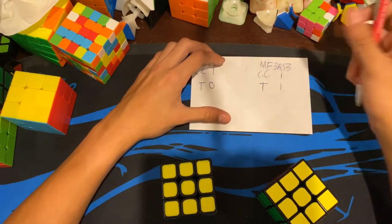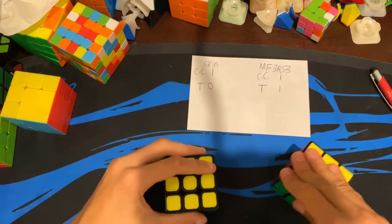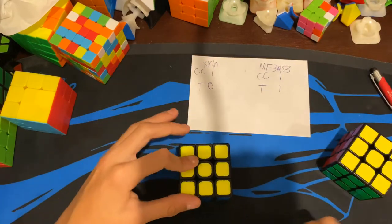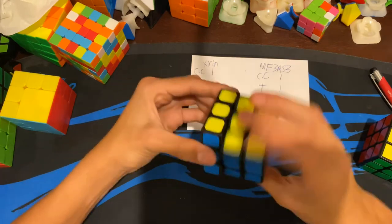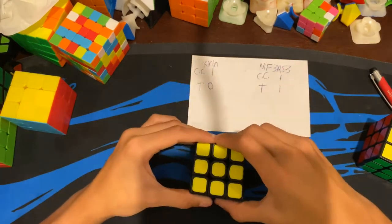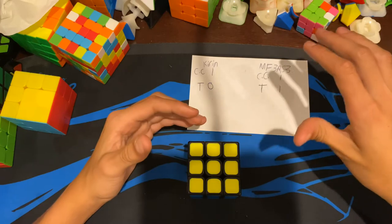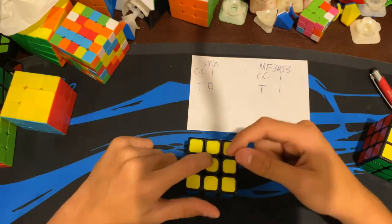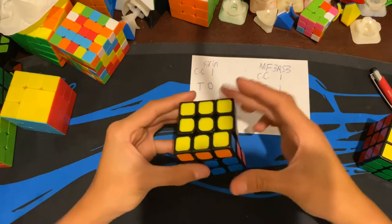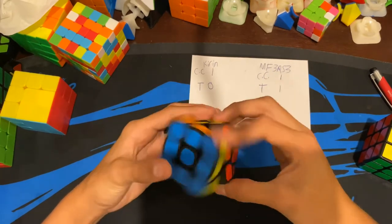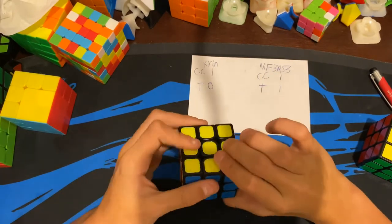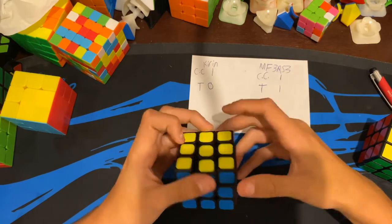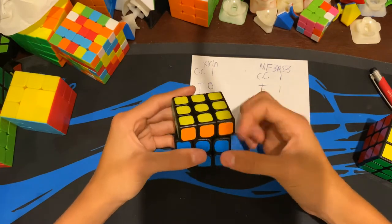2.5 again. So I guess I'll give this one to my main. I'll give it a slight advantage, one zero. So currently my MF3RS3 has two, Kirin has zero. The turning is actually pretty good, and this is how I'm gonna do reviews from now on. I'm gonna do reviews on new cubes and compare them to my mains.